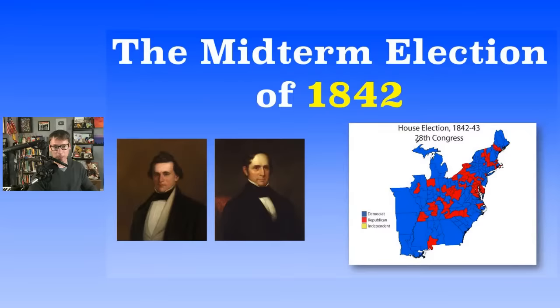In 1842, there were 52 seats total in the Senate; 27 were needed for a majority. The Whigs had 30 before but lost three — still held on to a majority with 27, barely. The Democratic Party picked up three.